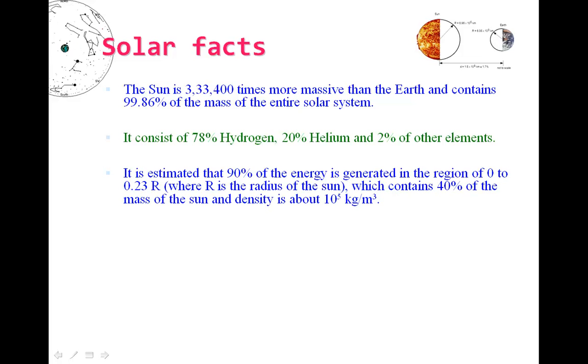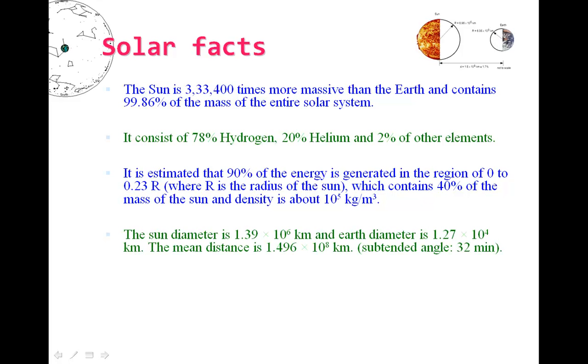90% of the solar energy is coming from its core, that is from 0 to 0.23 radius. And sun density is approximately 10^5 kg per meter cube.